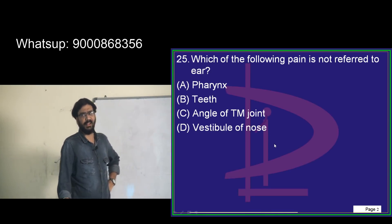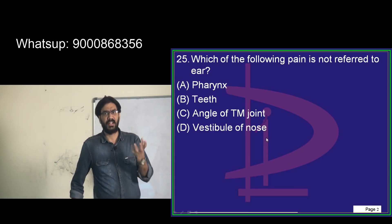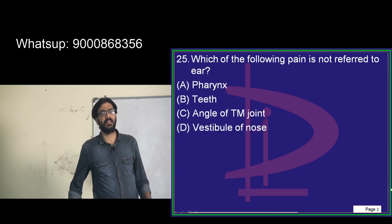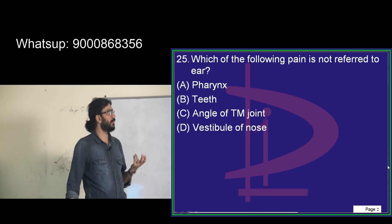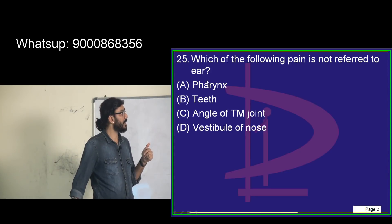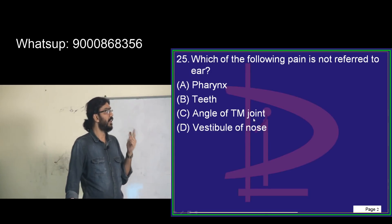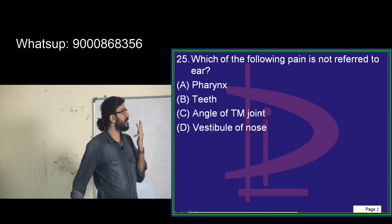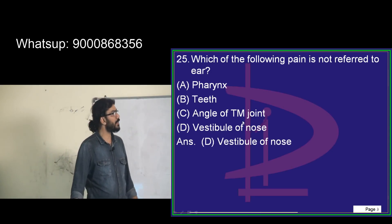Remember, people were asking about mnemonics. If you understand the subject, you can easily remember. In ENT, there is not much need for mnemonics. So: T for throat (pharynx), T for teeth, T for TMJ. The vestibule of the nose is the odd one out here.